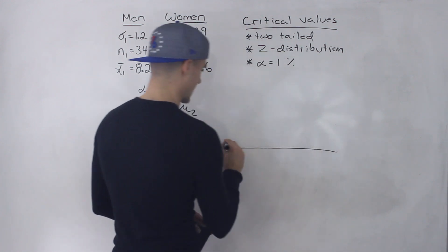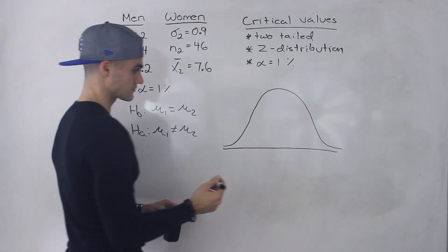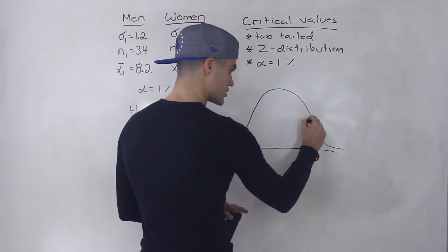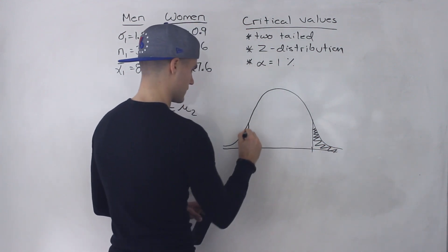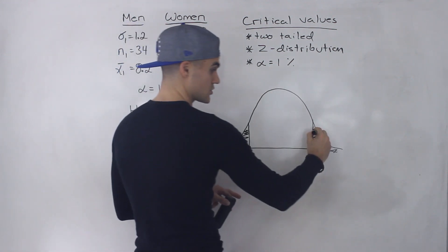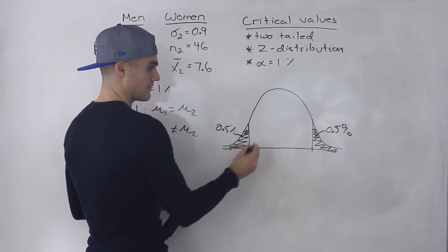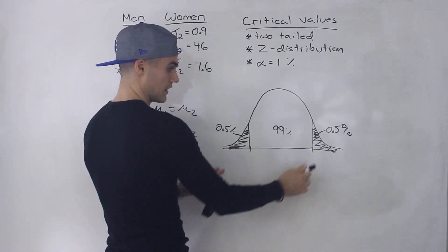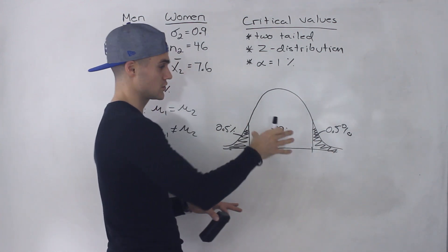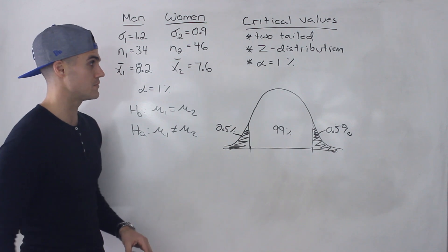It's exactly like before. We draw out our Z distribution, and because it's two-tailed there are two critical values — one on each side. The 1% significance is split between the two regions, so each tail is 0.5%, and the middle area is 99%. The shaded regions are the rejection region, and the middle is the non-rejection or acceptance region where we maintain the null hypothesis.